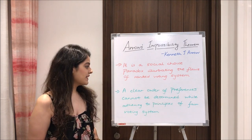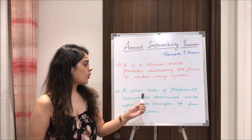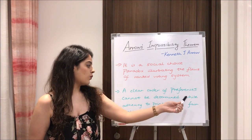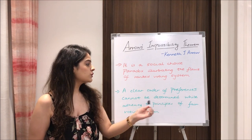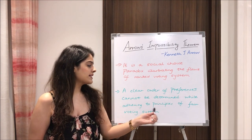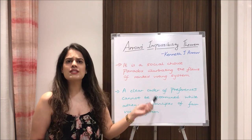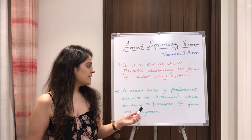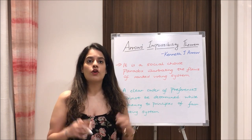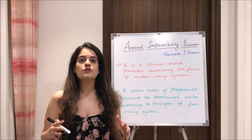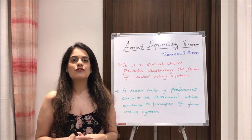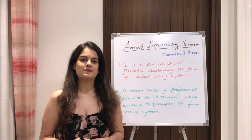Arrow also argued that a clear order of preferences cannot be determined while adhering to the principles of a fair voting system. In other words, we cannot get a clear order of our preferences or choices if we stick to a fair voting system.